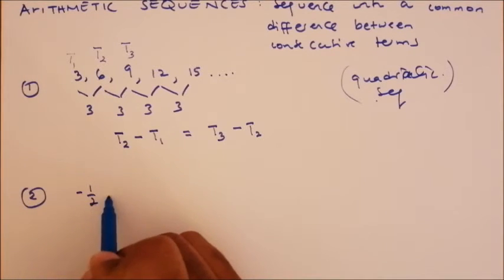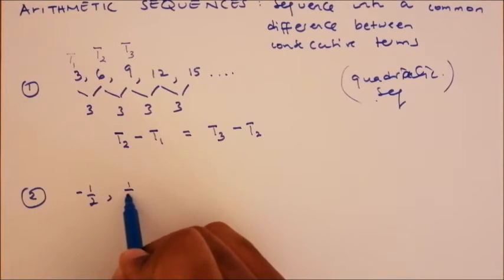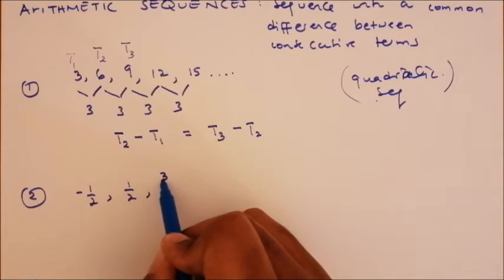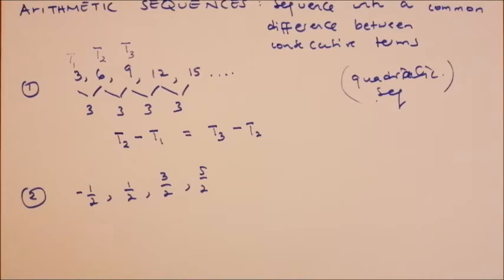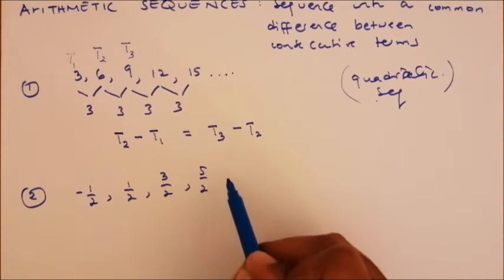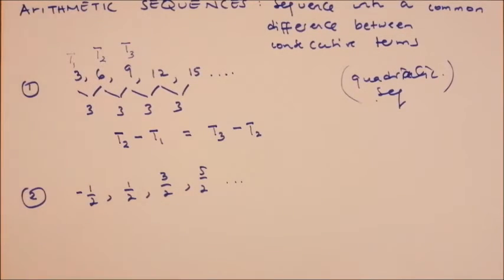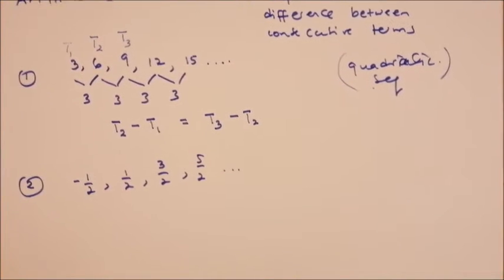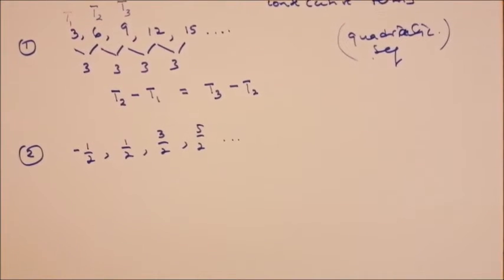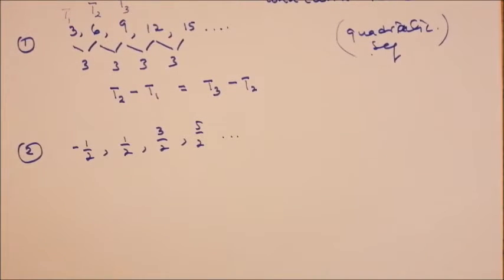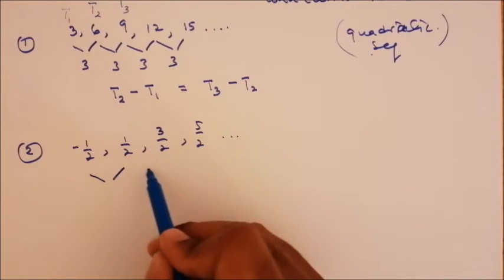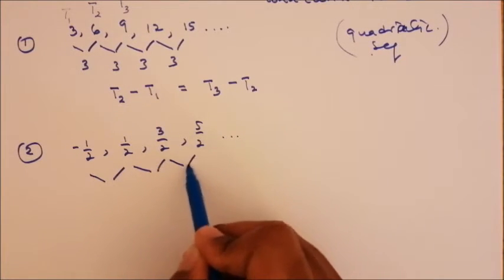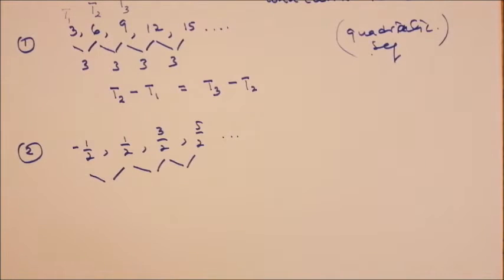Let's look at a second sequence: negative one-half, one-half, 3 over 2, 5 over 2. We need to determine whether this sequence is arithmetic or not. We'll do the same thing we did on the first sequence — find the common difference.